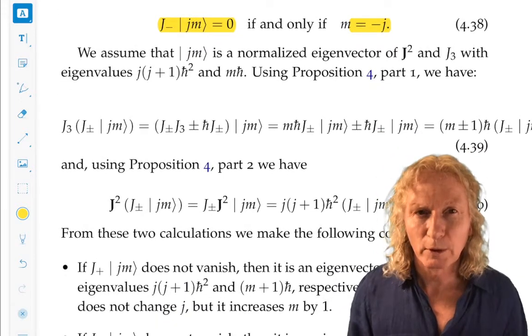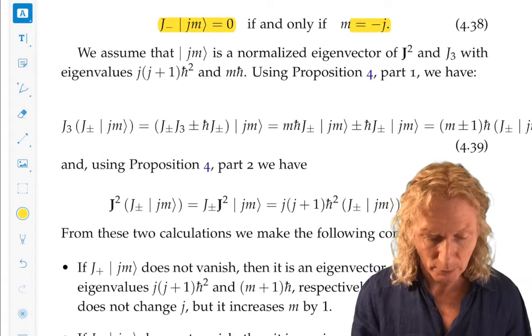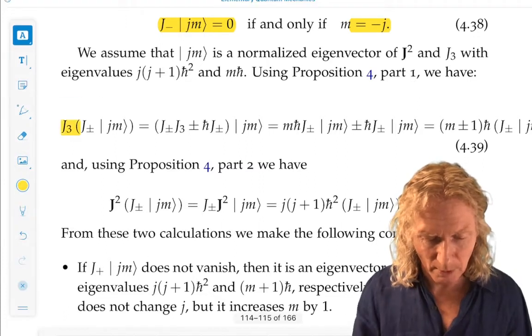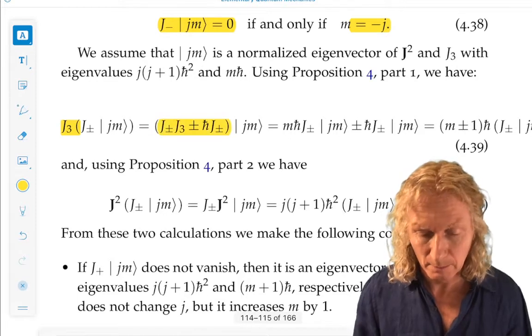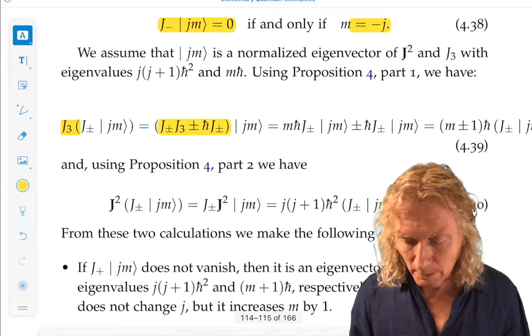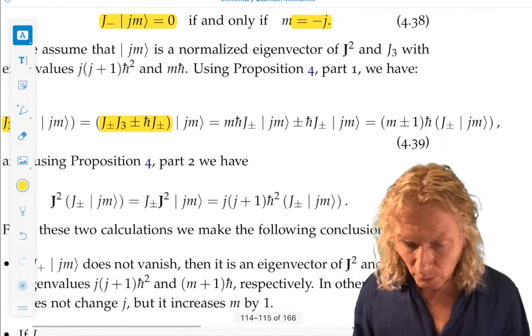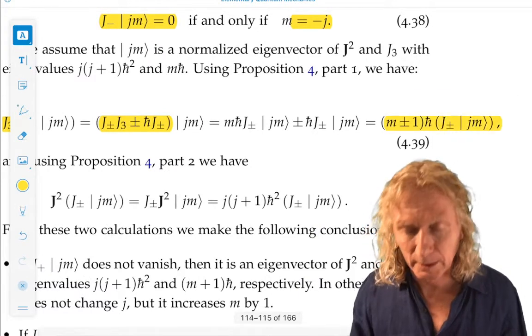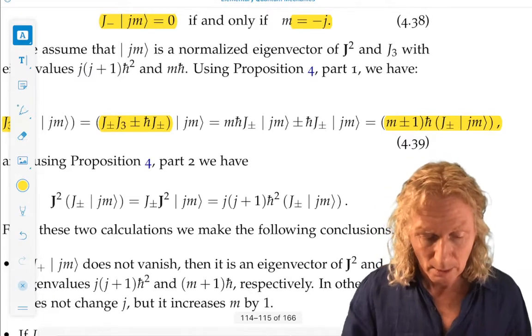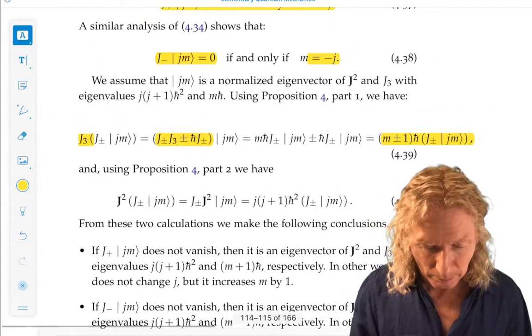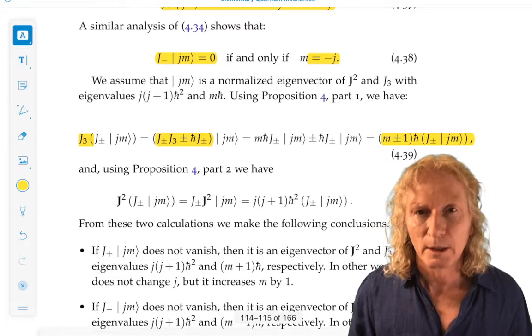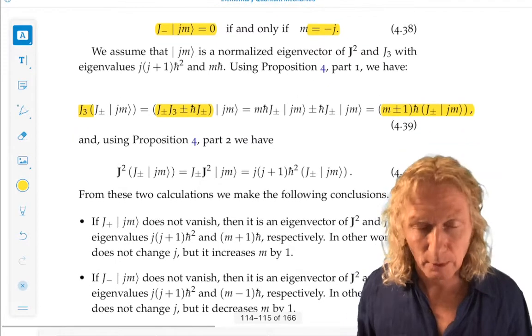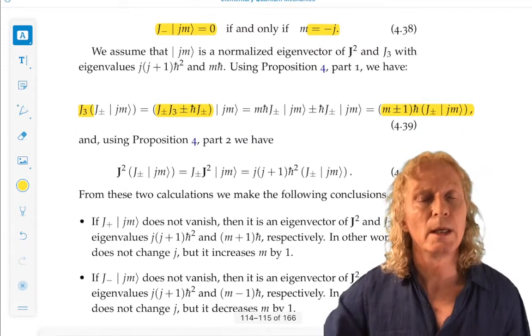Now, if you use those commutation relations in proposition 4, you can easily see that if J3 acts on J plus or minus M, that's where I've used a commutation relation right there, I get M plus or minus 1, H bar, J plus or minus, acting on ket J, M. So, as long as it's not 0, J plus acting on J, M gives us an eigenvector of J3, with eigenvalue increased by 1, M plus 1.